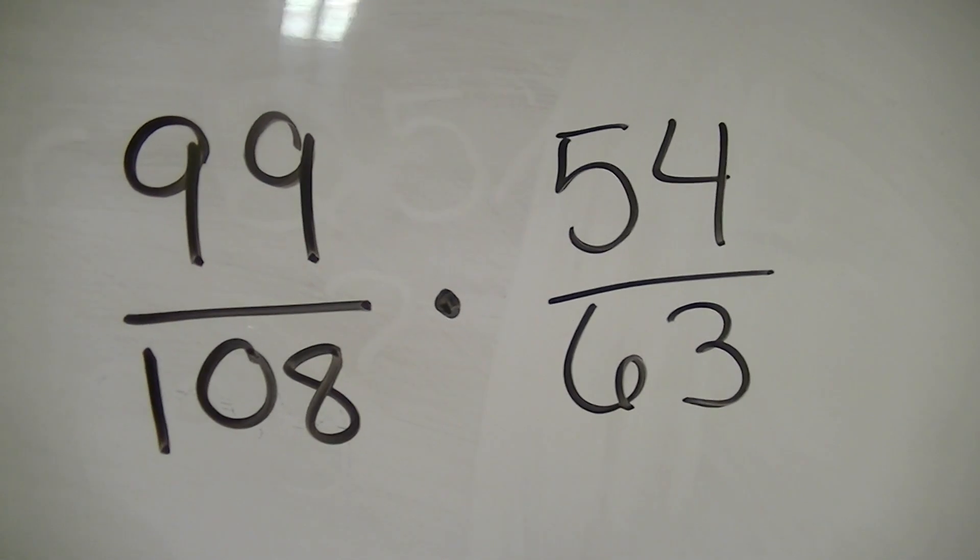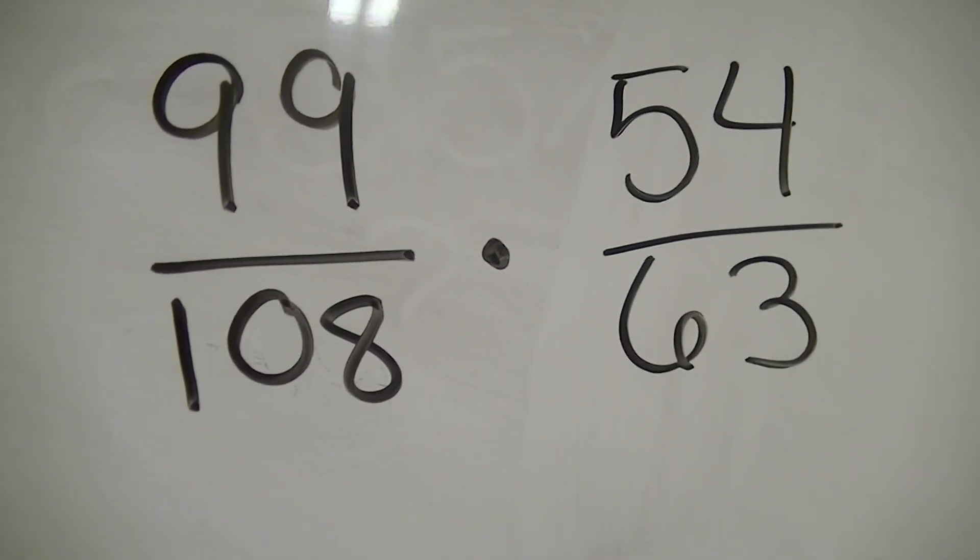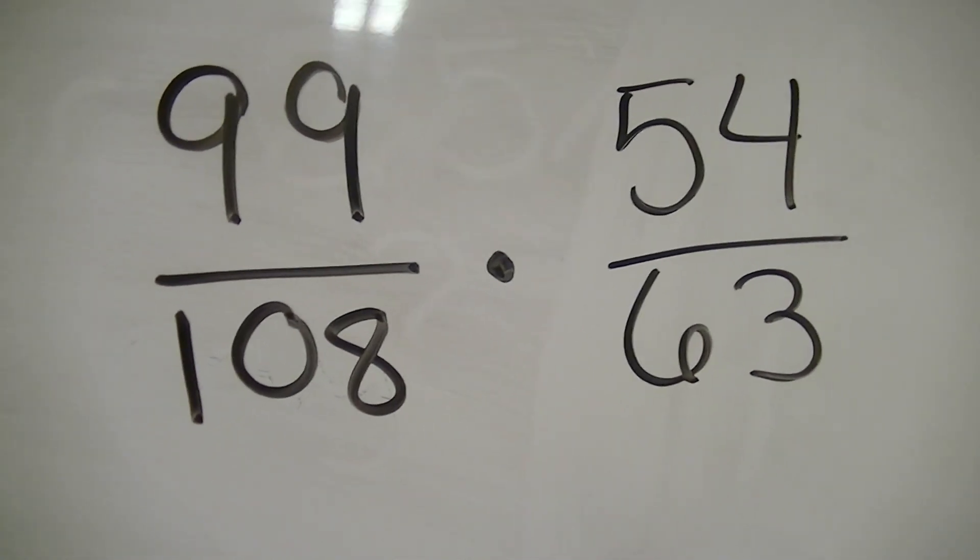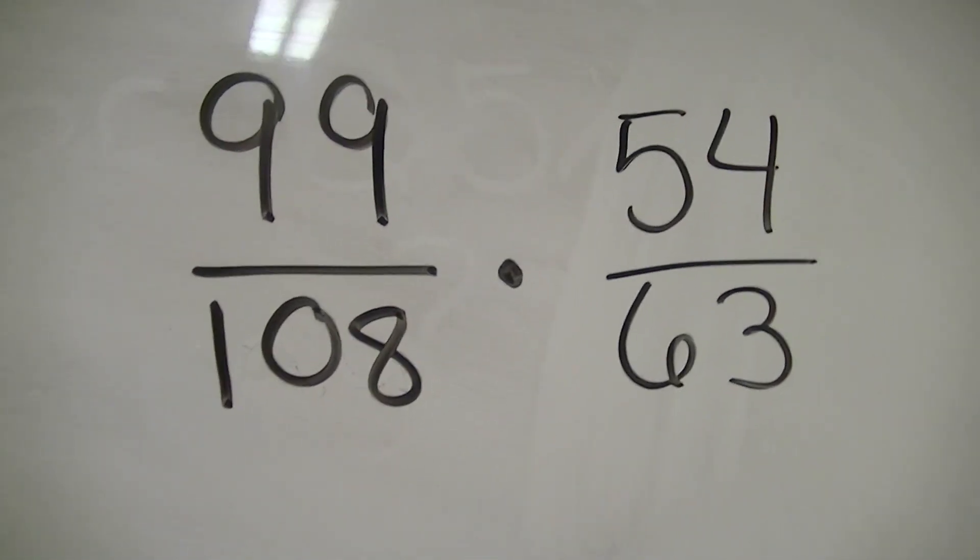Now that we have these big old numbers, we've got to ask ourselves, what number can go into this? We're going to cross cancel because I don't want to deal with these big numbers. Do you? Heck no. It's scary. So, instead of reducing after the fact, let's reduce ahead of time. Now, let's use our trick.